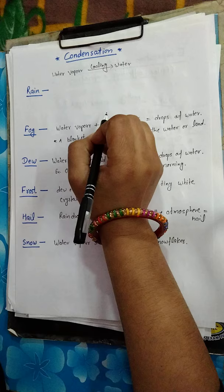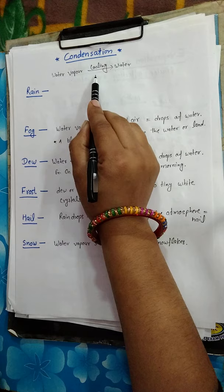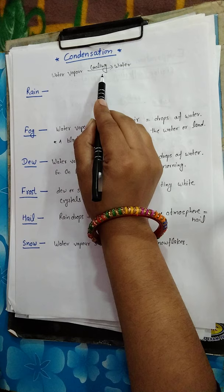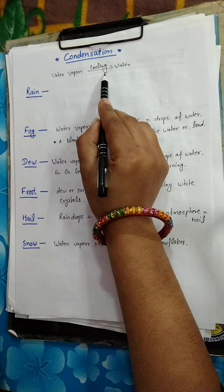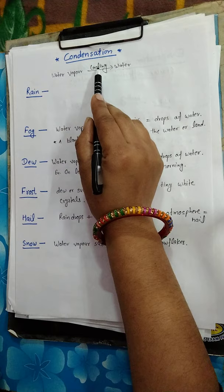When we make tea in a pot, we can see some water droplets on the pot. This is an example of condensation, because when the pot is warm, water vapor forms, and when that water vapor cools, we can see some water droplets on the pot. That is the process of condensation.